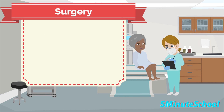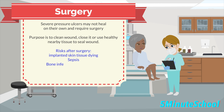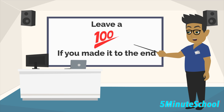Surgery is done to seal the wound, speed up healing, and minimise the risk of infection. Surgical treatment involves cleaning the wound, closing it by bringing the edges together, or using tissue from healthy skin nearby to close the ulcer. The challenge with pressure ulcer surgery is that patients are usually in a poorer state of health. Risks include necrosis of the implanted tissue, bone infection, abscesses, and even deep vein thrombosis.